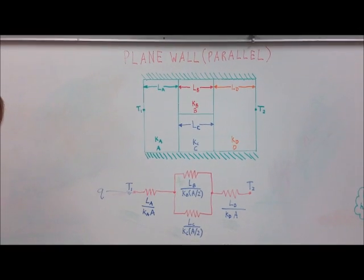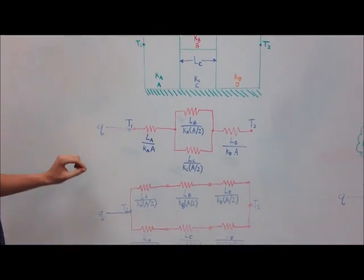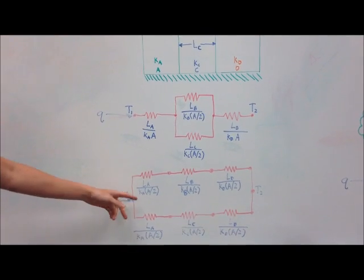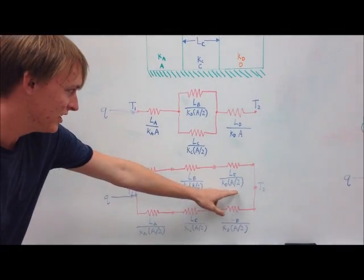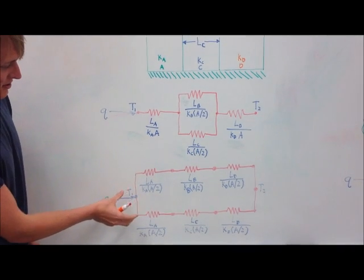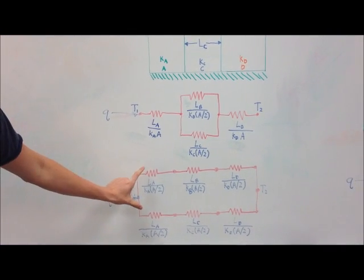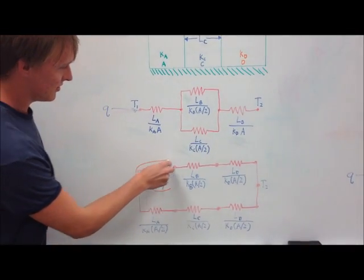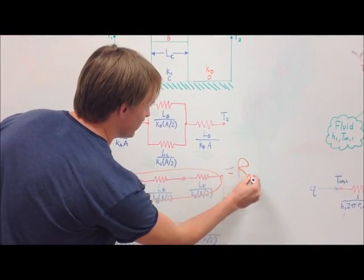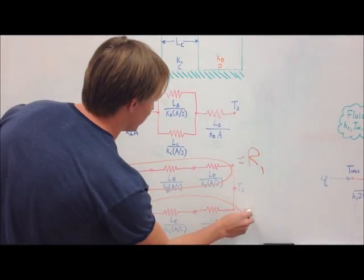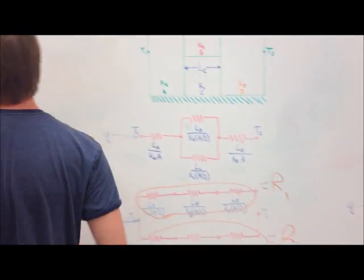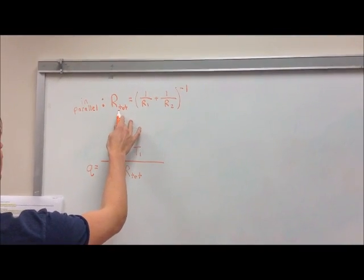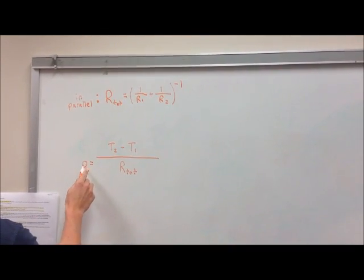You can approach the problem differently by drawing a different thermal circuit. You expand resistance A into parallel paths and do the same on side D. You then treat these as two resistances in series that are themselves in parallel, summing all resistances to get R1 and R2 for each path. Using the parallel resistance equation gives the total resistance, and from there you get the heat rate.